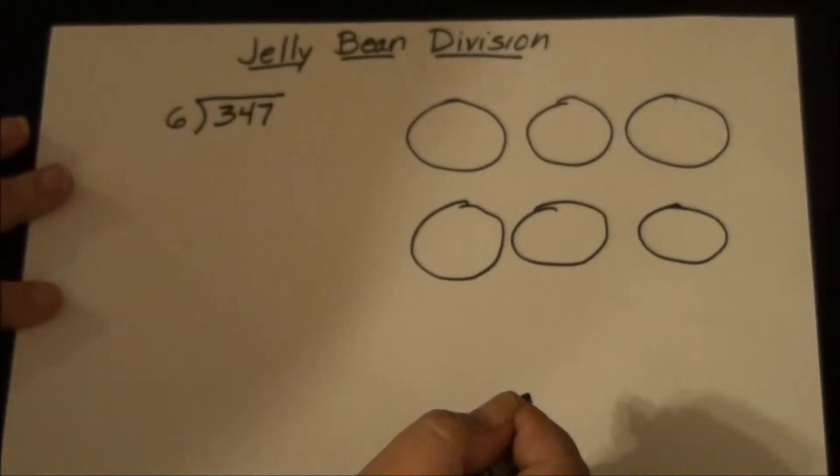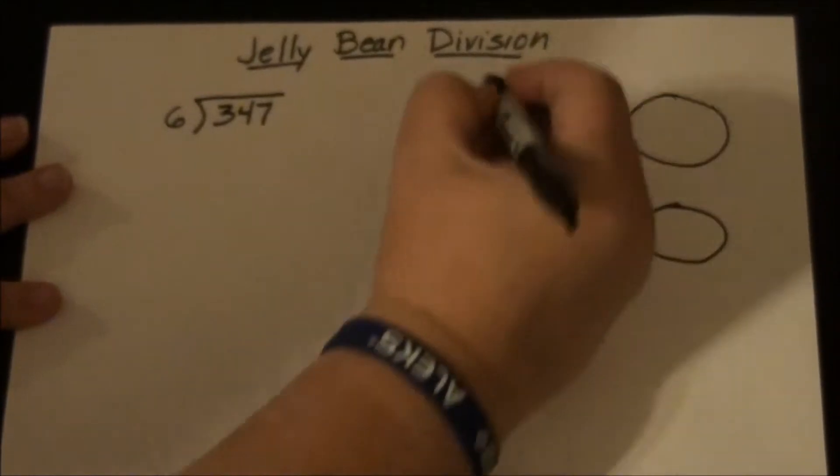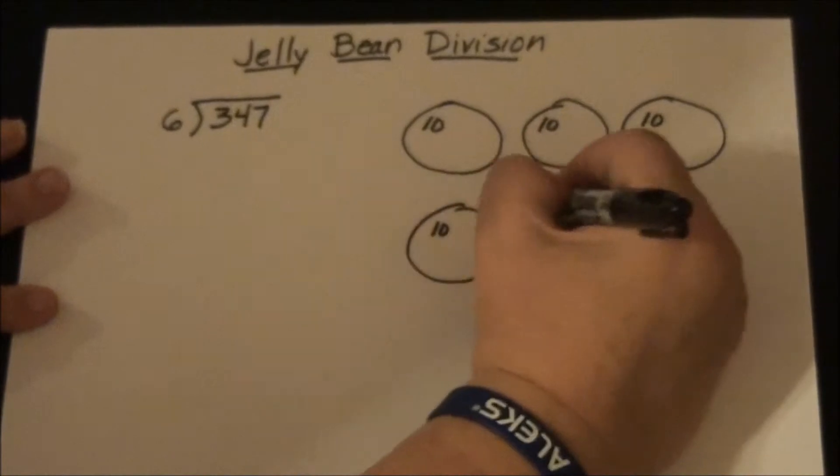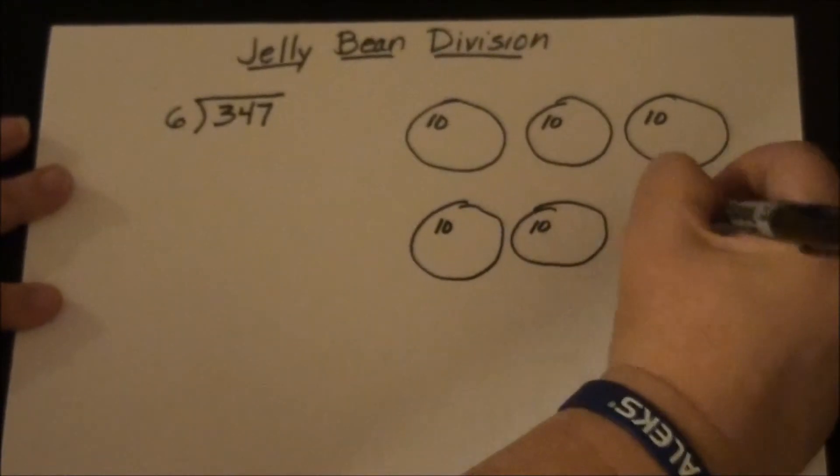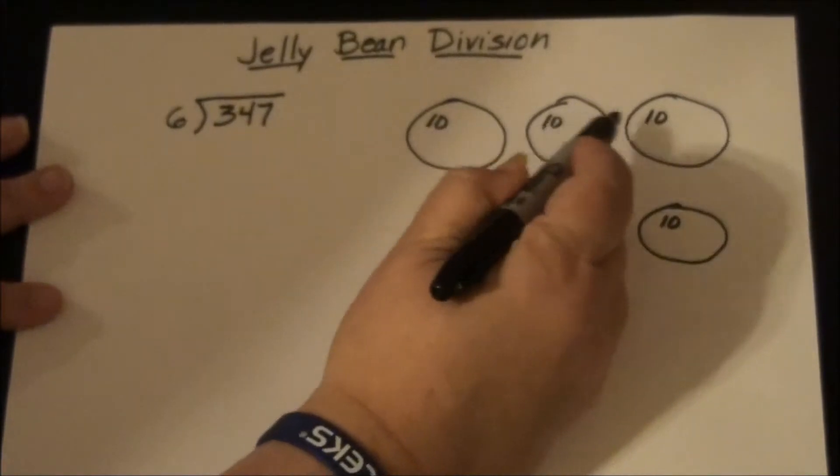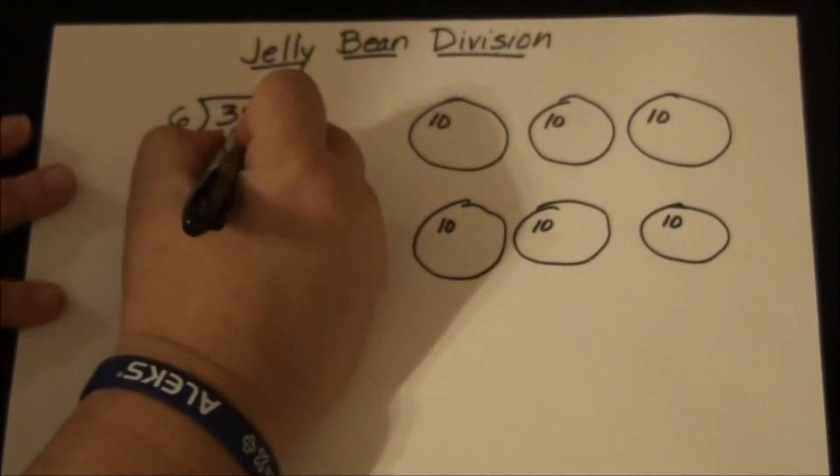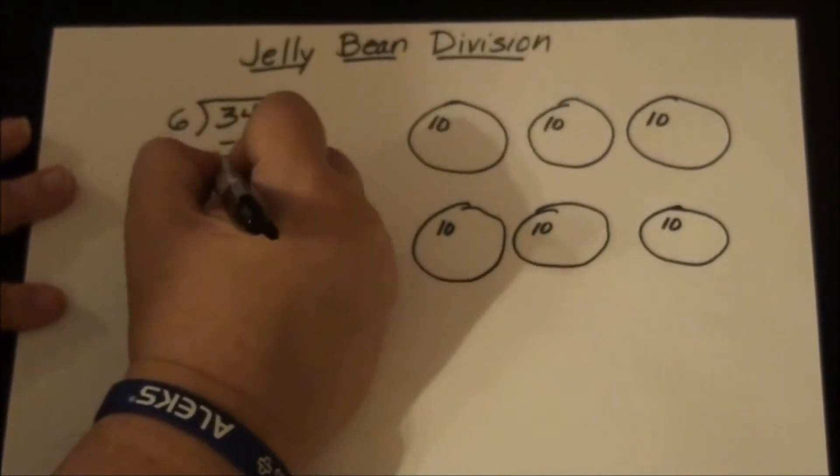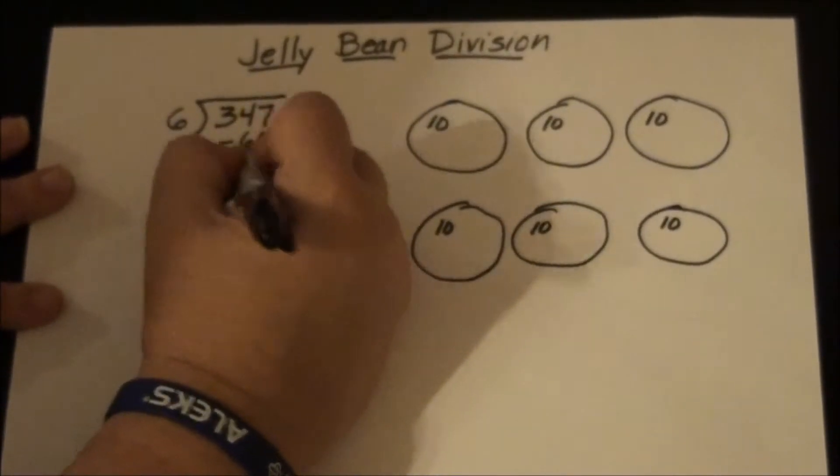So we're going to start with doing 10 jelly beans for each person. So we're going to put 10 jelly beans in each bowl. And so that equals 60: 10, 20, 30, 40, 50, 60. So we're going to subtract 60 from 347, and we end up with 287. Of course, they'll have to borrow a little bit here.